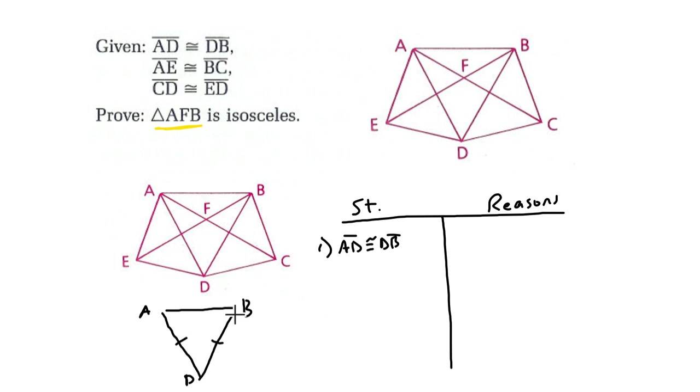That means that this triangle itself is isosceles. There's two equal sides, right? And that tells me that these two angles, by the way, are going to be congruent. But we'll get back to that.